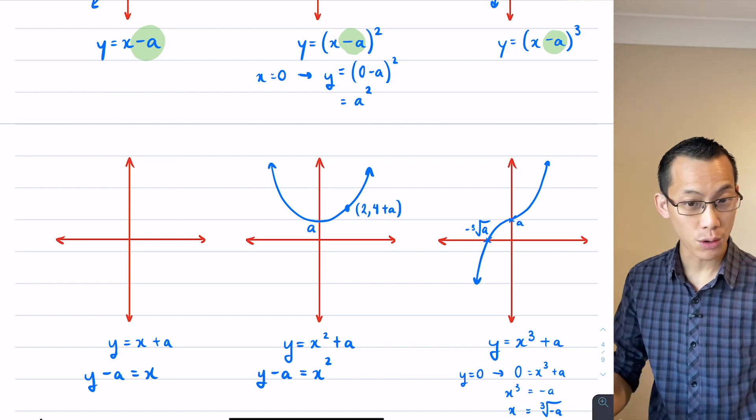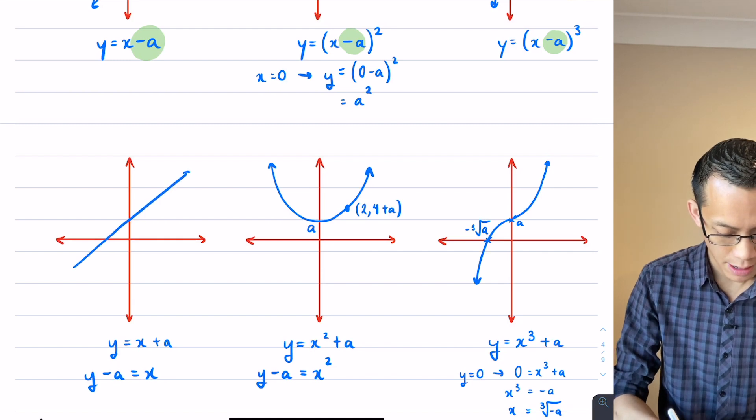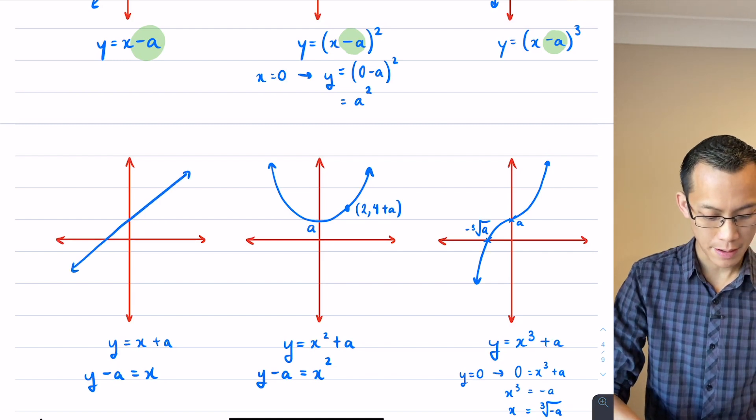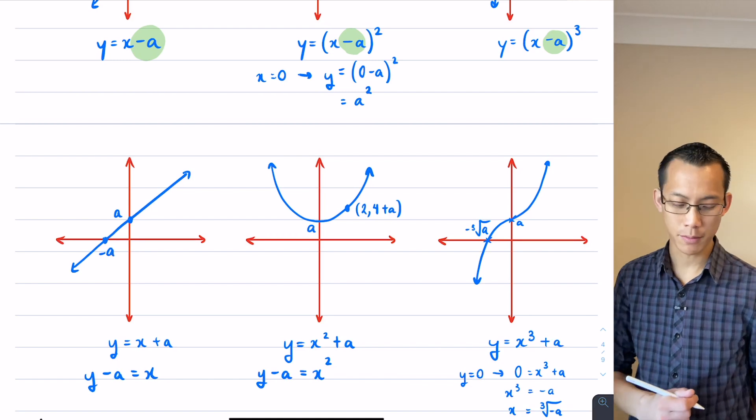It's going to move up, just like all the rest of them, A units. So let's try and thread the needle through there. There we go. This is going to be my intercept at A and then negative A down here in the bottom left.